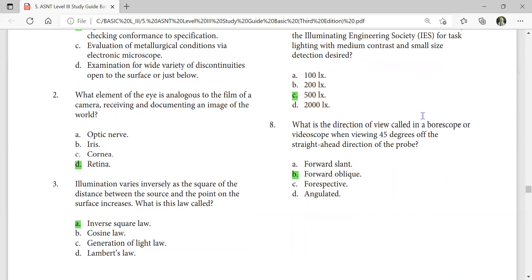What is the direction of view called in a boroscope or videoscope when viewing 45 degrees up the straight ahead direction of the probe? Forward oblique.